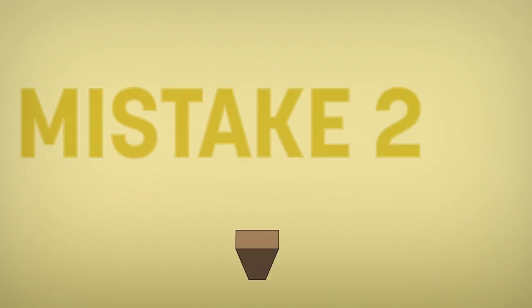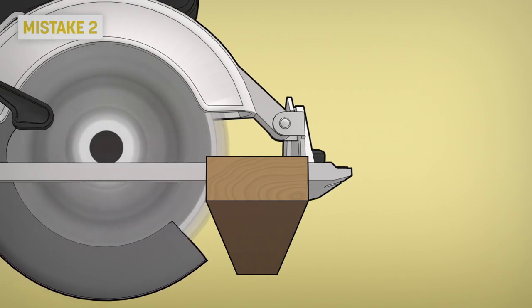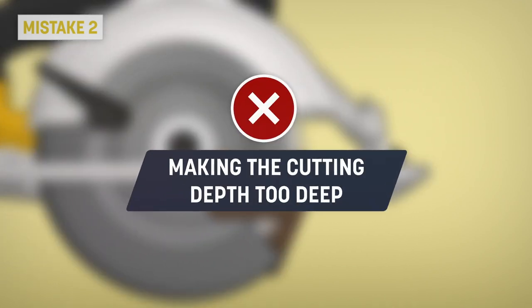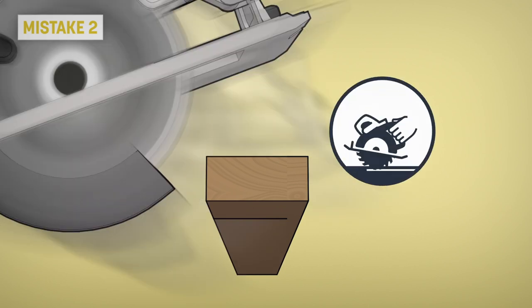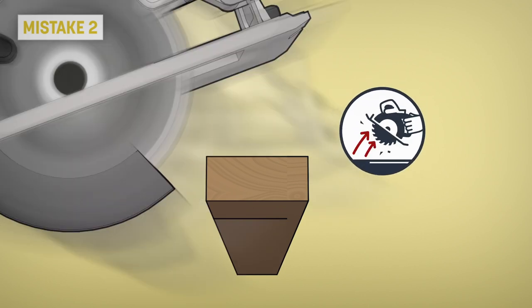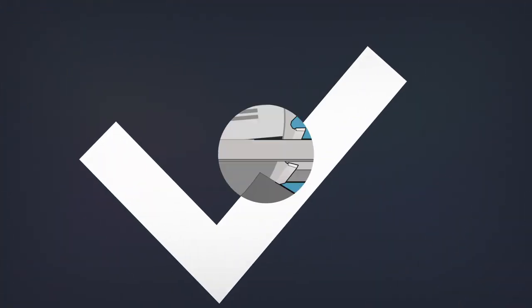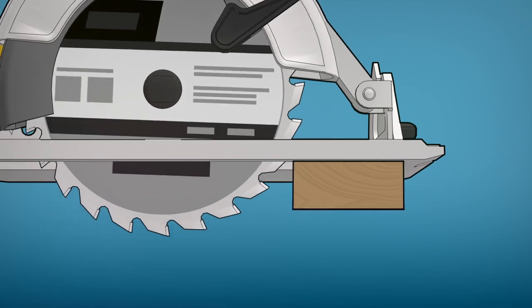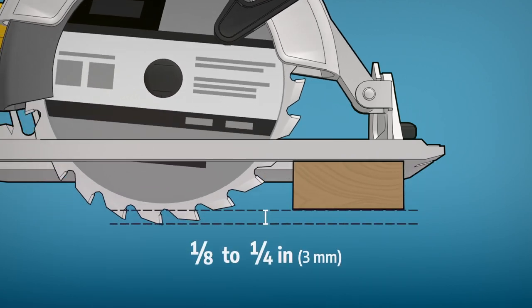Mistake 2: Making the cutting depth too deep. The larger the contact area with the blade, the higher the risk of kickback. Adjust the blade so that it extends about 1/8 of an inch below the material. That's less than a full tooth.